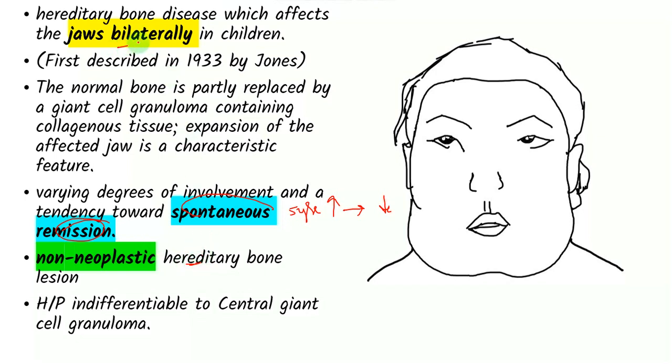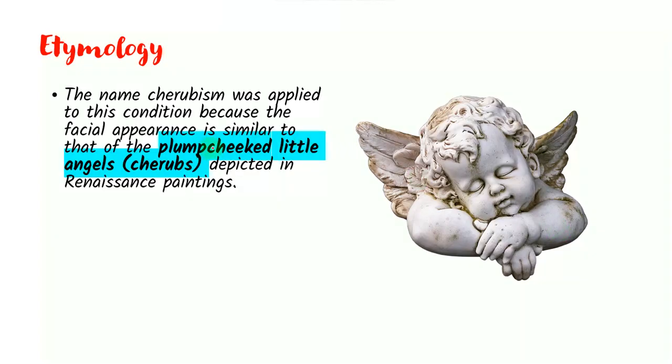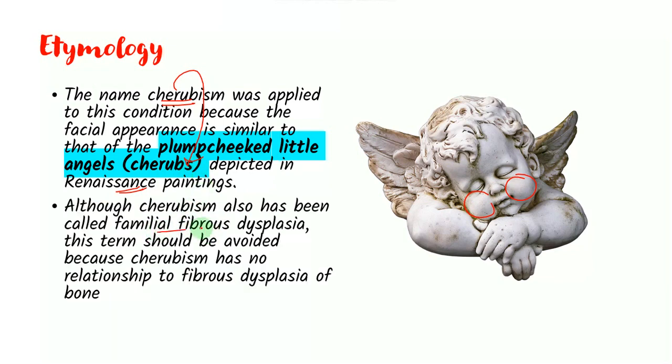And the third thing is that it affects the jaws bilaterally. So this is the classic example. It mainly affects the jaws, mostly the lower jaws, bilaterally. So it's symmetrical on both sides. This is why it is also called Cherubism. The word Cherubism is derived from cherubs. Cherubs were plump-cheeked angels that were seen in Renaissance paintings. So this is why the disease is called Cherubism. It was also called familial fibrous dysplasia, but this term is wrong because it has no relationship to fibrous dysplasia.